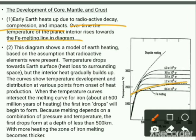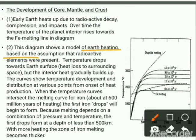This diagram shows a model of Earth heating based on the assumption that radioactive elements were present. On the X-axis, depth in kilometers is given; on the Y-axis, temperature is given. This line is the melting curve of iron.